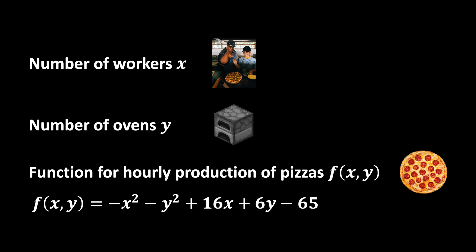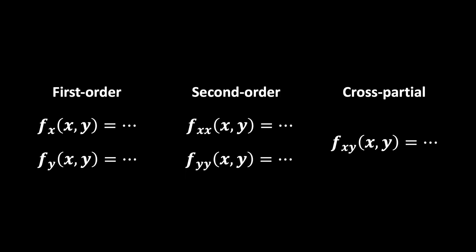Going back to our pizza enterprise, we now denote the number of workers as x and the number of ovens as y, which are part of this function of x and y for our hourly baking output of pizzas. Can you figure out by yourself what are all the partial derivatives?